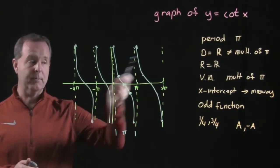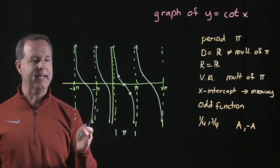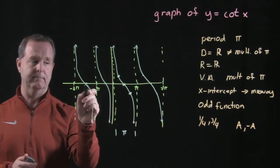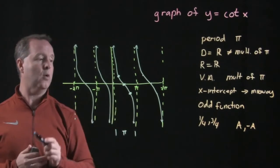Range is all real numbers. Vertical asymptotes we've talked about. X-intercepts are at the midway point between two vertical asymptotes. It's an odd function, so it has symmetry about the origin.